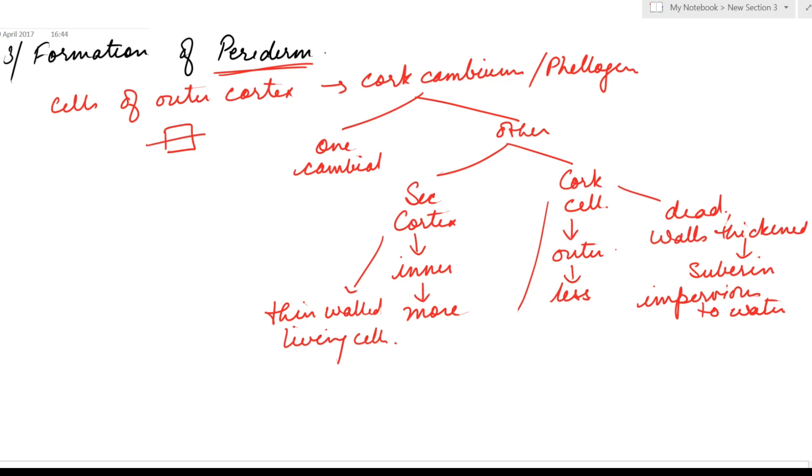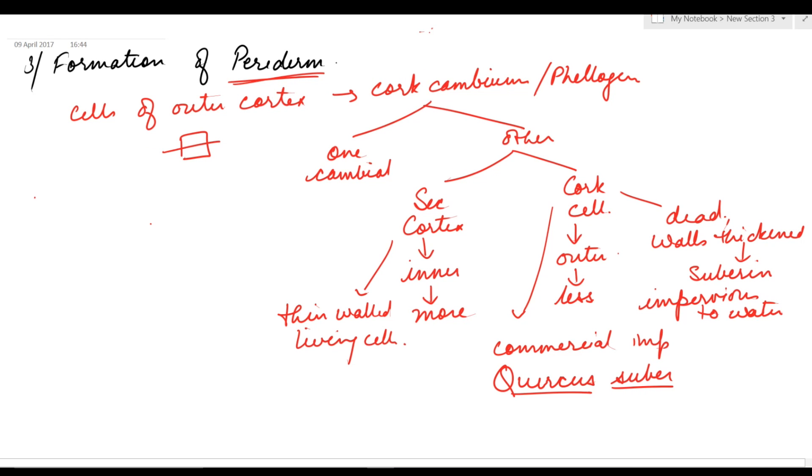Cork of commercial importance is Quercus suber. Secondary cortex is referred as phelloderm, while cork is referred as phellem.